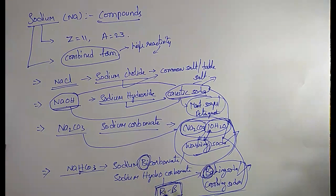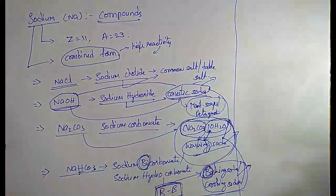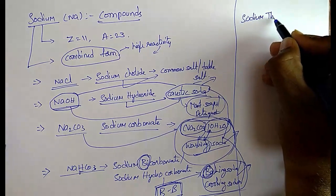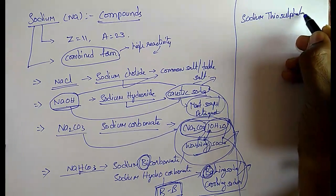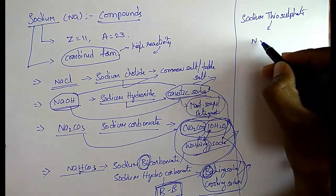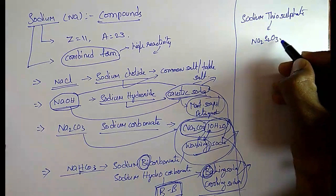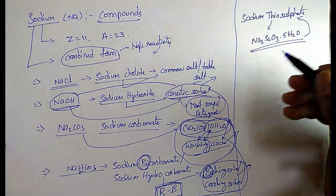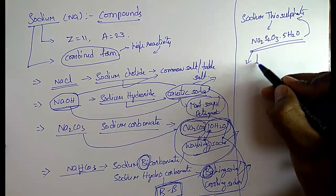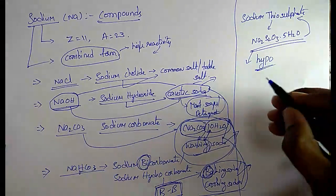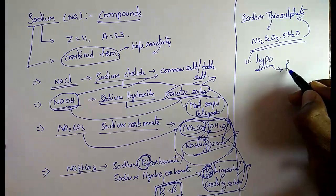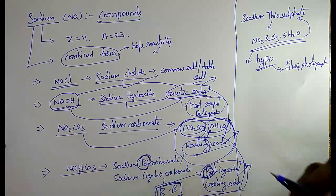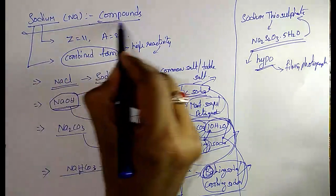The next one is sodium thiosulfate. Its chemical formula is Na2S2O3·5H2O. It is also known as hypo. It is used for film and photography. These are the important compounds of sodium.